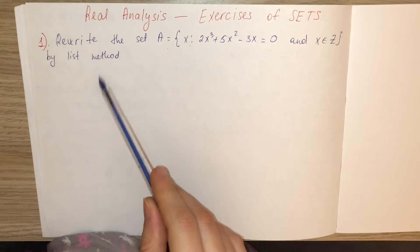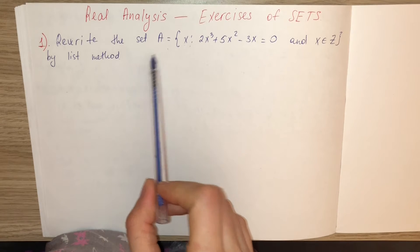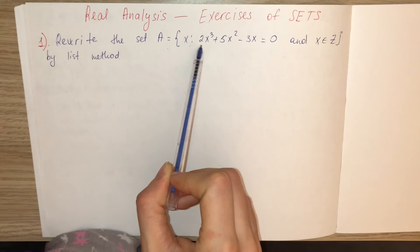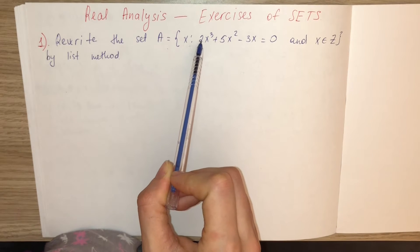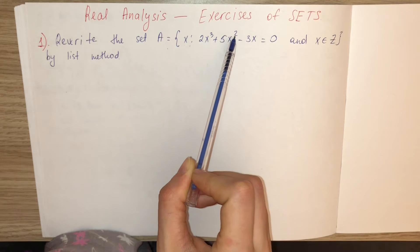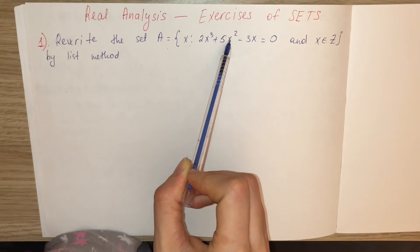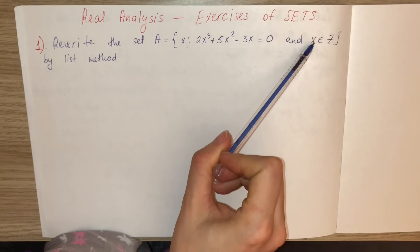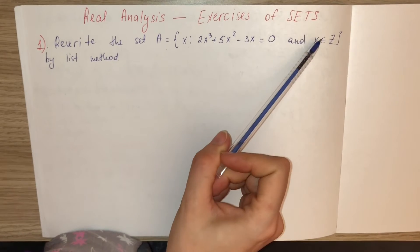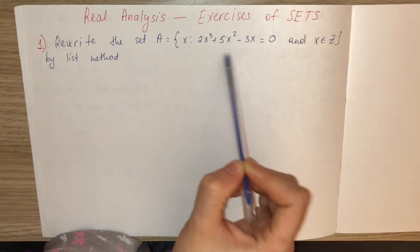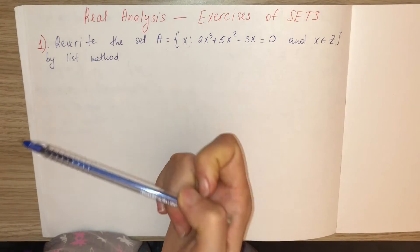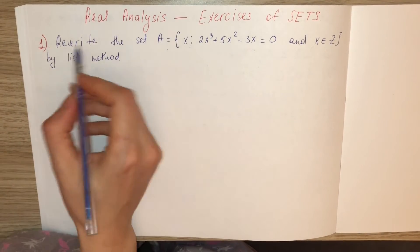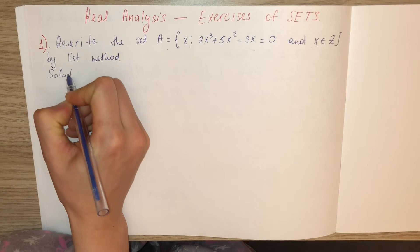Our first exercise is to rewrite the set A, which consists of elements x such that x satisfies the equation 2x³ + 5x² − 3x = 0 and x is an integer. Rewrite this set by list method. First, let's find the solution of this equation.